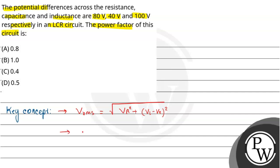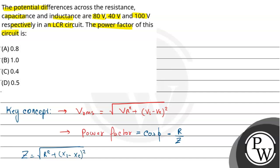Second concept: Power factor, which equals cos φ, where φ is the phase difference between voltage and current. Cos φ equals R by Z, where Z is the total impedance. In case of an LCR circuit, Z equals root of R squared plus (XL minus XC) whole squared.